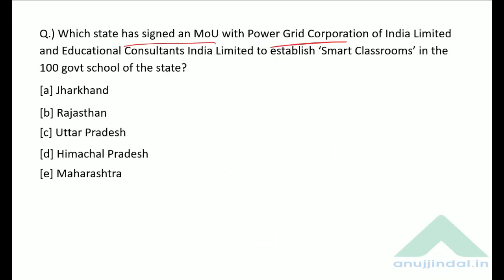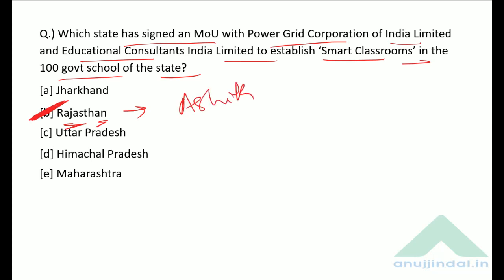Which state signed an MOU with Power Grid Corporation of India Limited and Educational Consultants India Limited to establish smart classrooms in 100 government schools? The correct answer is option B — Rajasthan. The Chief Minister is Ashok Gehlot and the Deputy Chief Minister is Mr. Sachin Pilot.